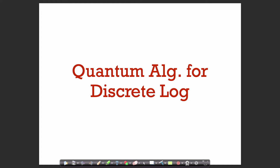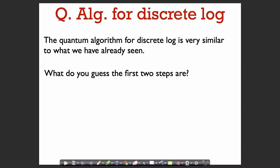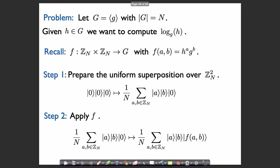In this video, we're going to go over the quantum algorithm for the discrete logarithm problem. You can probably already guess what the first two steps of the algorithm are going to be — it's very similar to what we've already seen. First, we're going to prepare some kind of uniform superposition and then apply an oracle. Let me just remind you what the function is in this case that we have oracle access to.